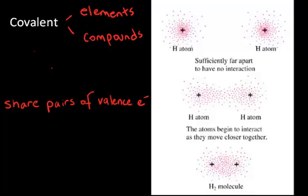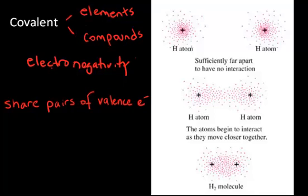This type of bonding occurs when the atoms within the compound have similar electronegativity. Electronegativity is the attraction for that particular atom for the shared pair of electrons in the bond. If the electronegativity is similar, then the electrons will be shared equally or nearly equally between the two nuclei held together by this covalent bond. So the bond is a shared pair of valence electrons — that's why it's called covalent.